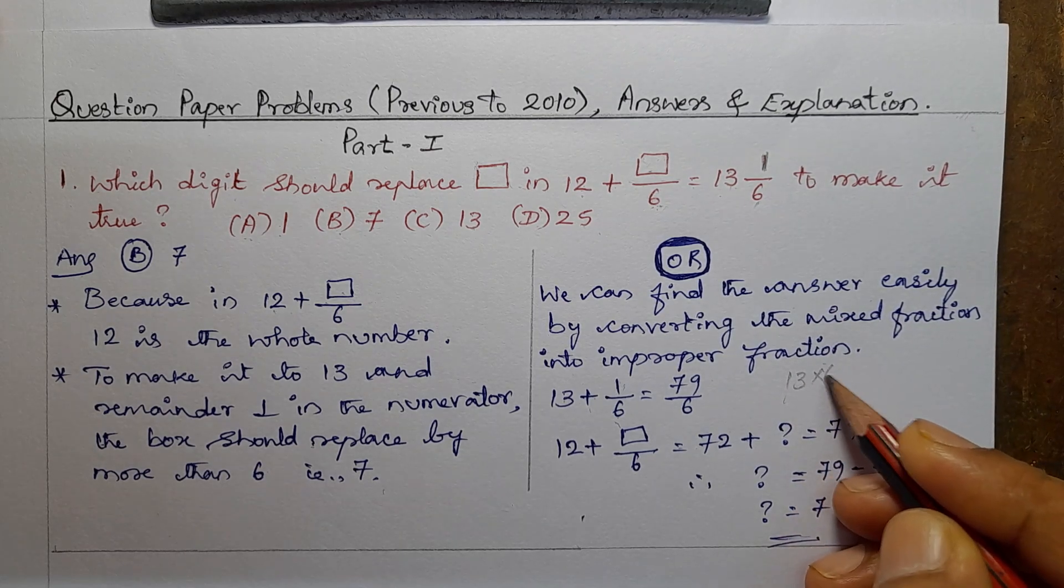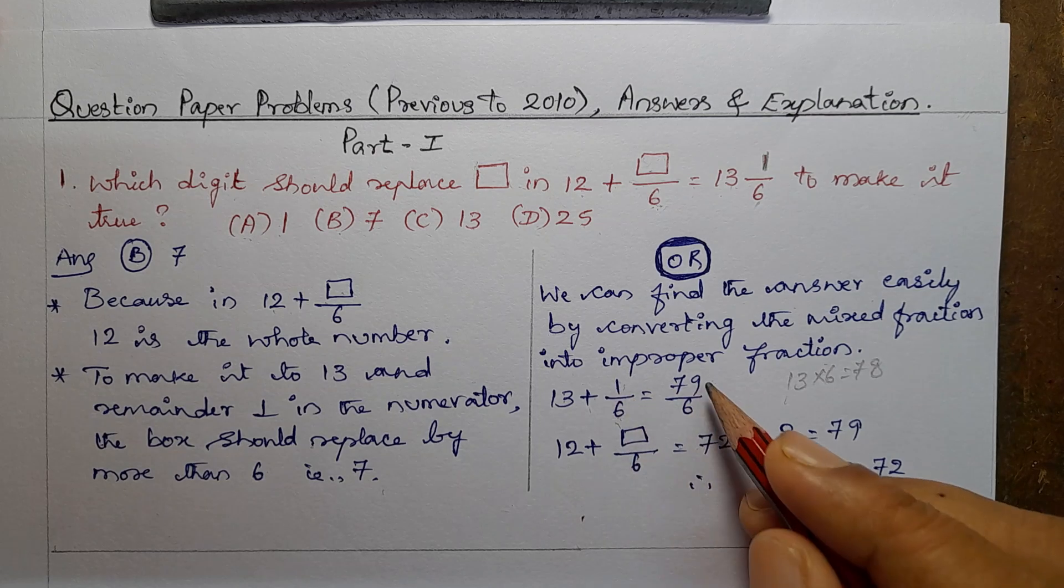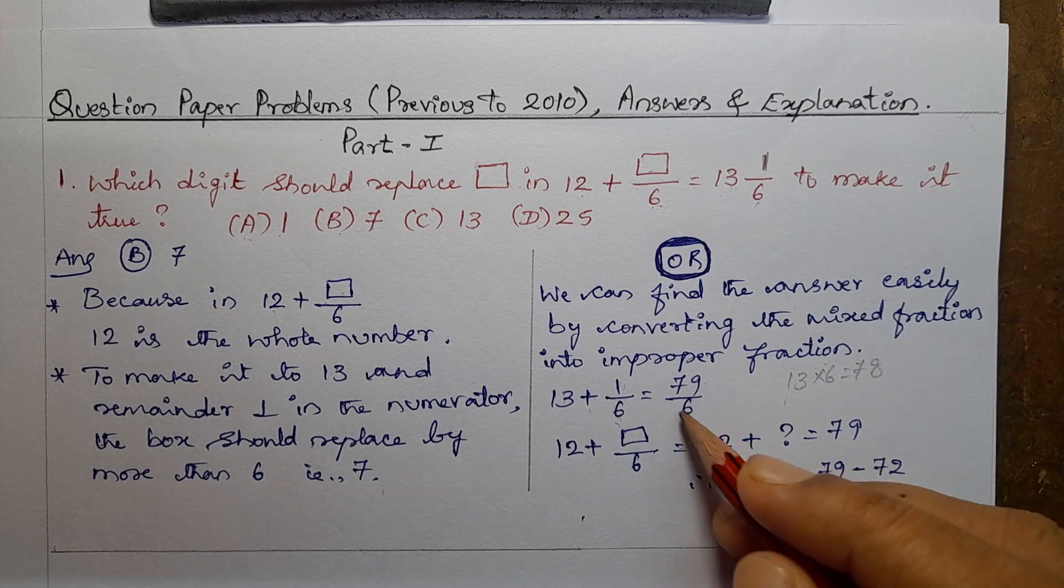So 13 times 6 is 78. 78 plus 1 is 79 divided by 6. Okay, this is improper fraction.